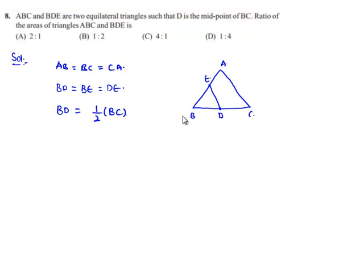As ABC and BDE are equilateral triangles, angle A is equal to angle B is equal to angle C is equal to 60 degrees. And in triangle BDE, angle B is equal to angle D is equal to angle E is equal to 60 degrees.